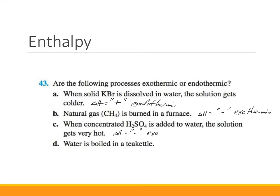Water is boiled in a tea kettle. If water is being boiled, you've got to have an energy source, so it must be taking in energy. Therefore ΔH for this process must be positive, and this must be an endothermic process.